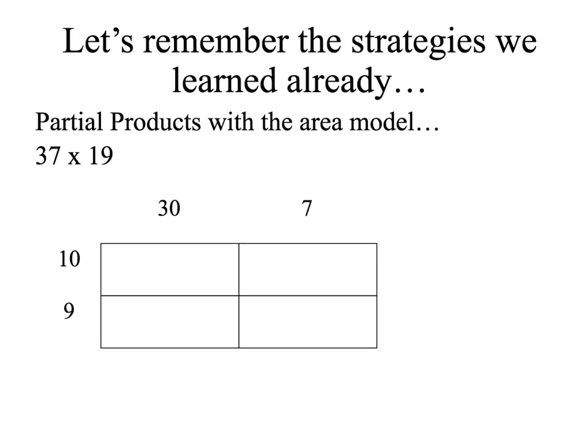First let's remember the strategies we've already learned. Let's use partial products with an area model to multiply 37 times 19. To start with I break my 37 into 30 and 7 and my 19 into 10 and 9 using the place values.